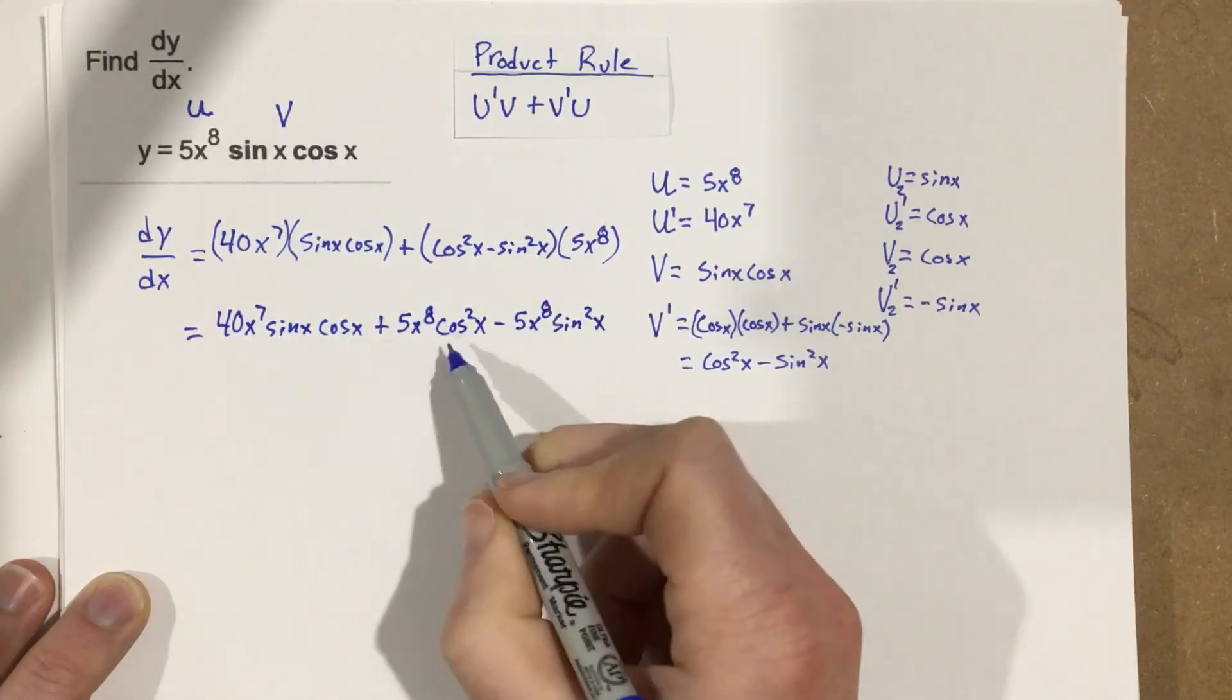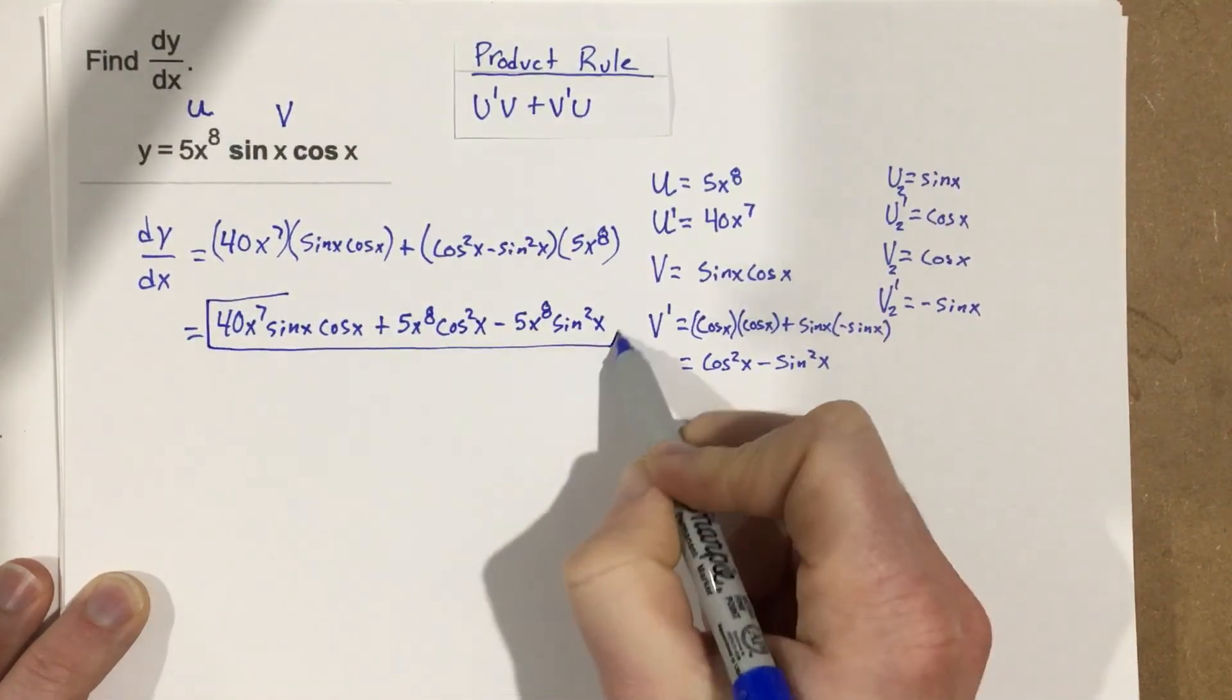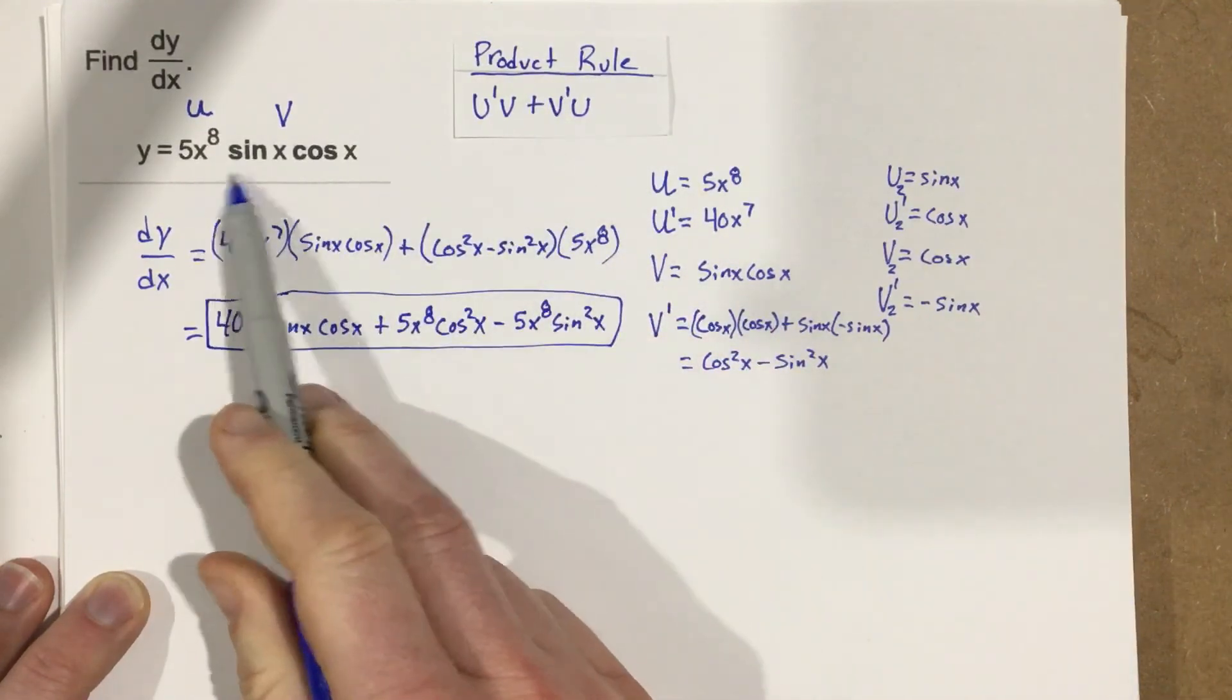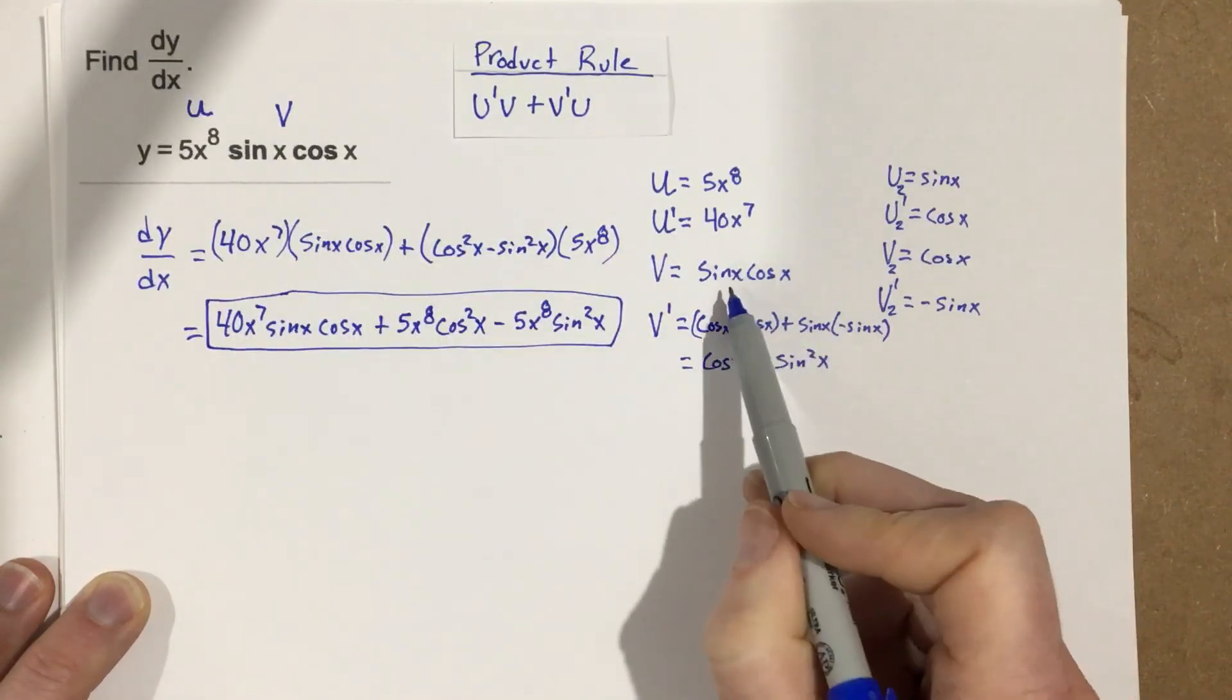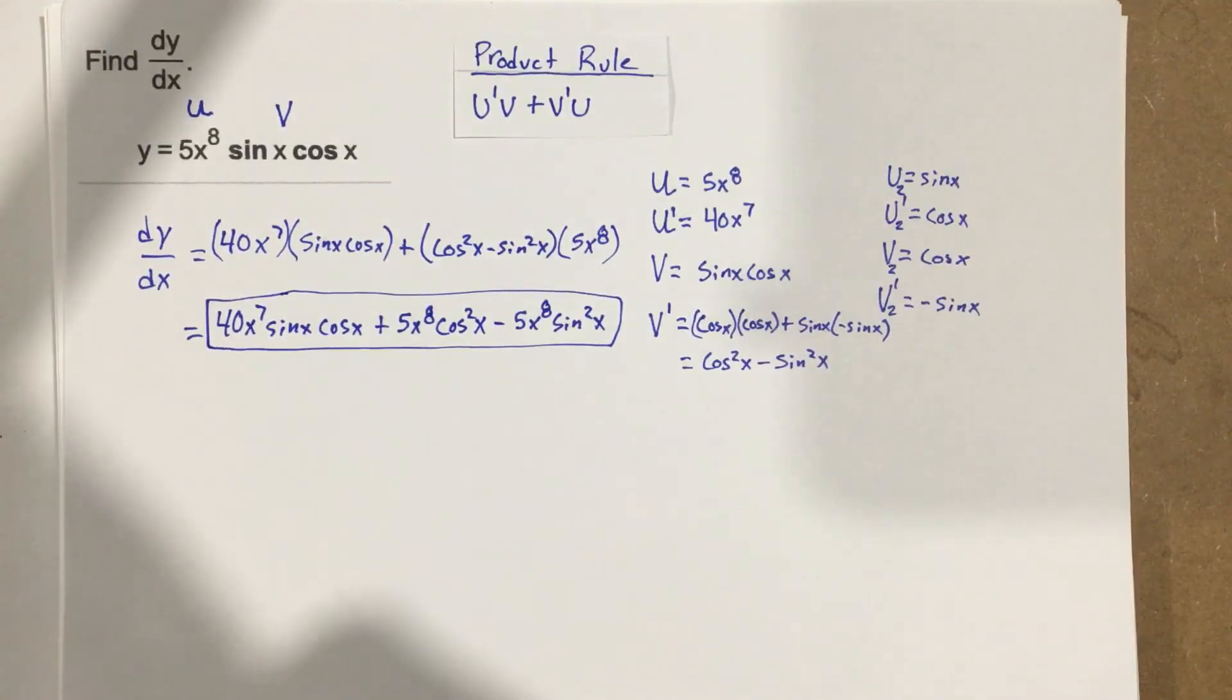And it looks like we can't simplify anything else. So this is our derivative for the original function. And we did this using the product rule on the original function, but then when we actually take the derivative of that v function, we had to use the product rule a second time.